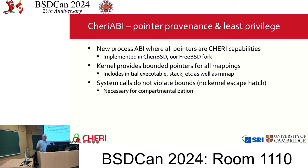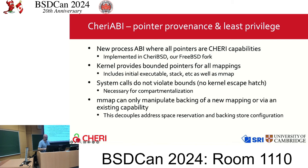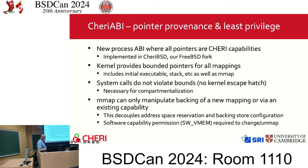Additionally, mmap can only manipulate the backing of either a new mapping — address space that no one was using — or via an existing capability. This is to decouple address space reservation and backing store configuration. We have a software permission on the capability so that, for instance, malloc can give up that permission in the capabilities it returns, which means callers of malloc can't unmap that memory or turn it executable.